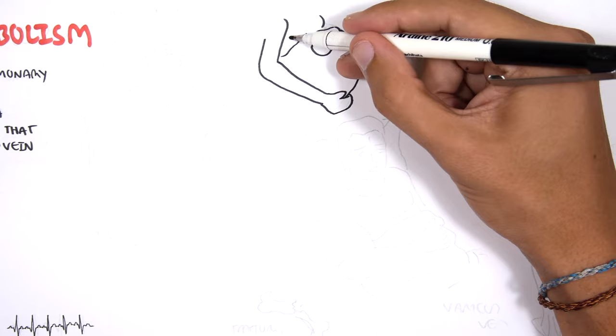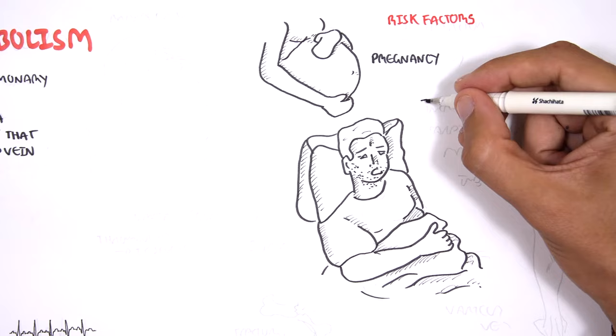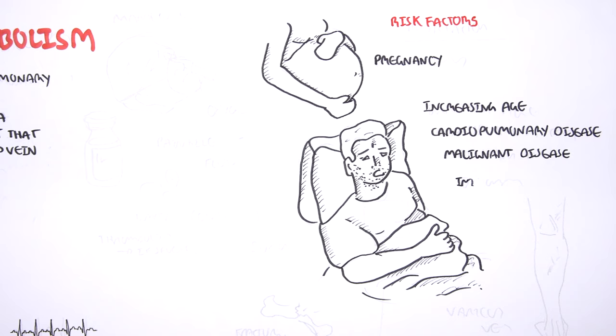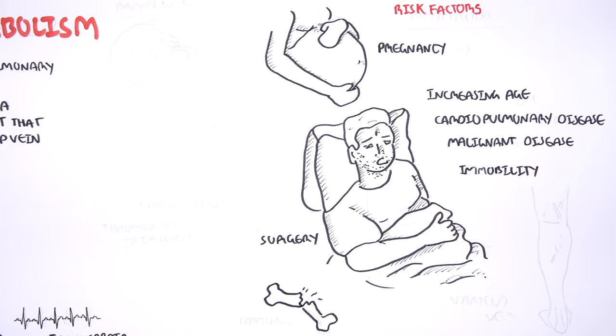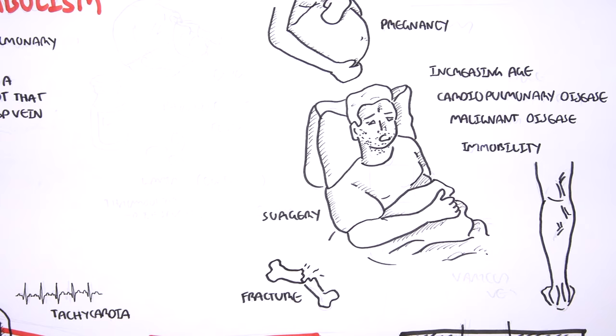What are some risk factors for developing pulmonary embolism? One common risk factor is pregnancy. Other risk factors include increasing age, cardiopulmonary disease, malignant disease, being immobile, and having serious orthopedic surgery such as of the hip or knee. Other risk factors include fracture, which can result in a fat embolus traveling to the heart, and varicose veins.